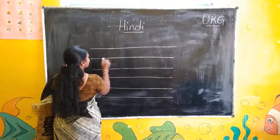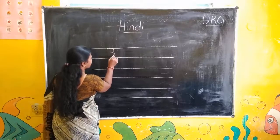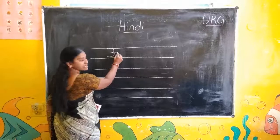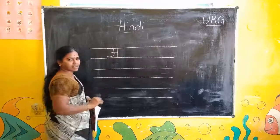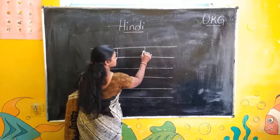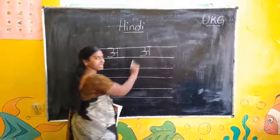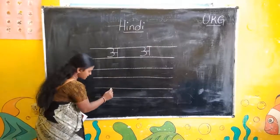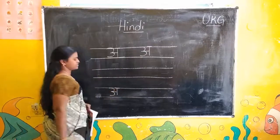Dekhiye, idhar do lines hain na. Upar ka line hai na — udhar se start kijiye. Okay, first you write a standing line, then a sleeping line, again a standing line and up to the sleeping line, and again sleeping line — this is 'A'.